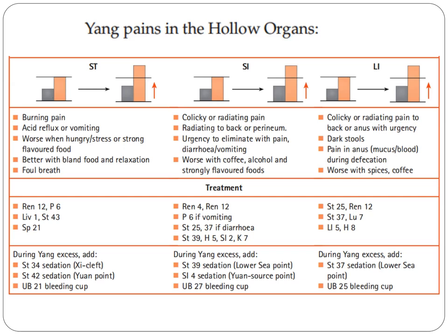During yang excess, add Stomach 39 sedation — the lower He-sea point of the small intestine — then SI4 sedation — the Yuan-source point of the small intestine — and UB27, bleeding cup.